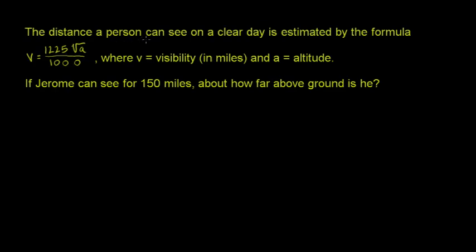The distance a person can see on a clear day is estimated by the formula v equals 1225 times the square root of a, all of that over 1000, where v is visibility in miles and a is equal to altitude.